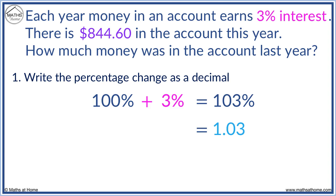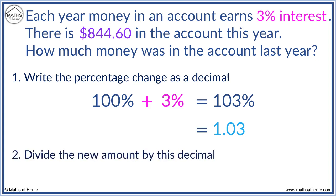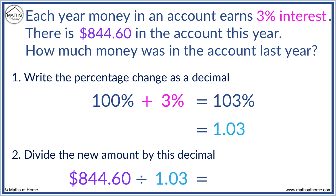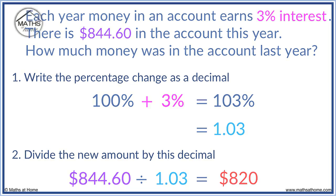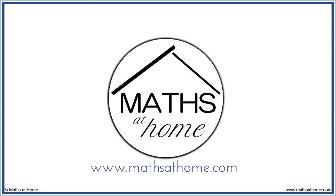We divide the new amount of $844.60 by 1.03 to obtain $820. There was $820 in the account before it grew to $844.60 with interest. Visit mathsathome.com for further videos and practice.